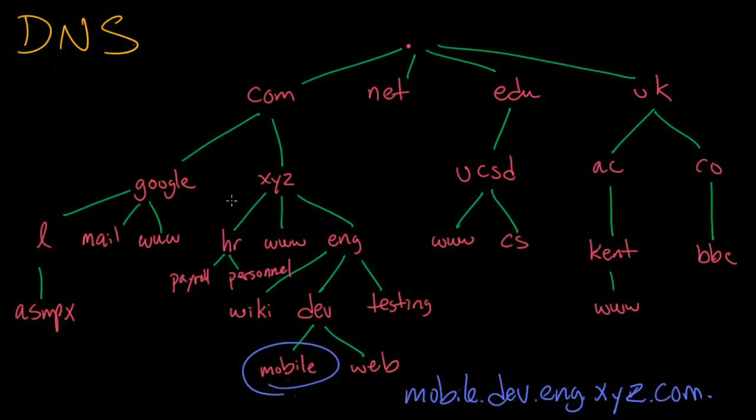The query now goes to the name servers for the xyz.com zone and it sees that it needs to go into eng. So again, the query gets handed down to the eng.xyz.com zone. From there, it goes to the dev.eng.xyz.com zone and the answer is found right here. This answer is then sent back to whatever computer was issuing the request.